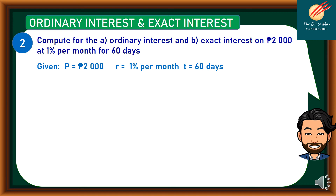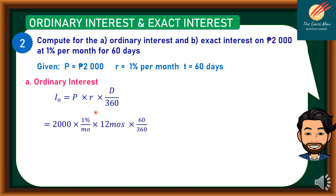Take note that the rate is 1% per month, so we need to compute it for a year, and in a year there are 12 months. To compute for Ordinary Interest: I sub O is equal to Principal times Rate times D over 360, which gives us 2,000 times 1% per month times 12 months, times 60 over 360. Using our calculator, the answer is P40.